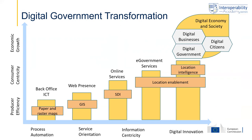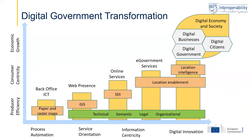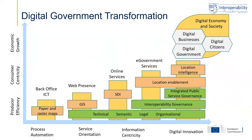This also brings challenges regarding interoperability — another central element of the course — where different levels of interoperability need to be addressed, requiring an integrated interoperability governance. And when we truly talk about a location-intelligent government as part of a digital economy and society, we need to think carefully about how to integrate different services and how to govern this integration of many public services. This figure visualizes the core concepts of the course and shows how they relate to each other.